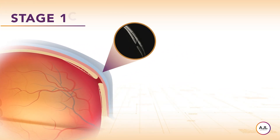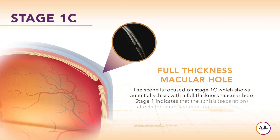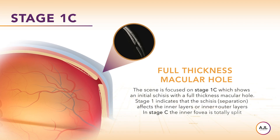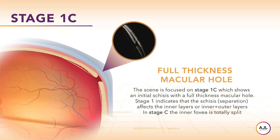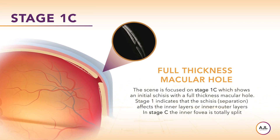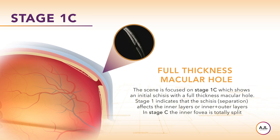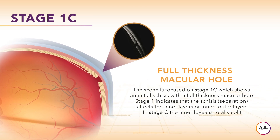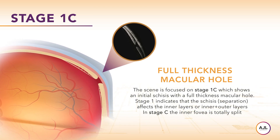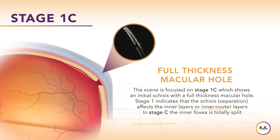Stage 1c shows initial schisis with a full thickness macular hole. Stage 1 indicates that the schisis affects the inner layers, or inner and outer layers. In stage C, the inner fovea is totally split.